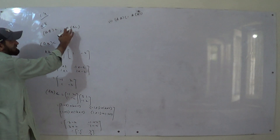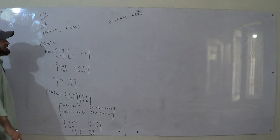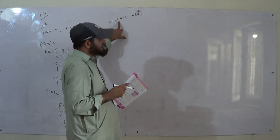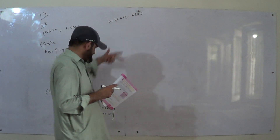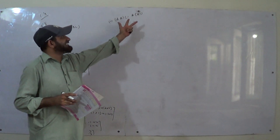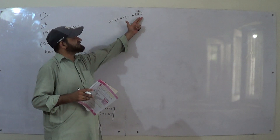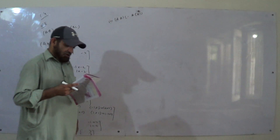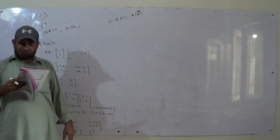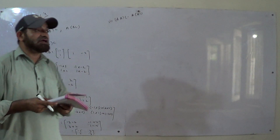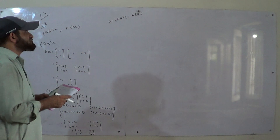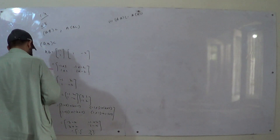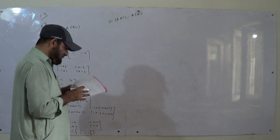First we find BC, then multiply by A. On the other side, first we find AB, then multiply by C. We get both answers the same. This is called the associative law of multiplication.